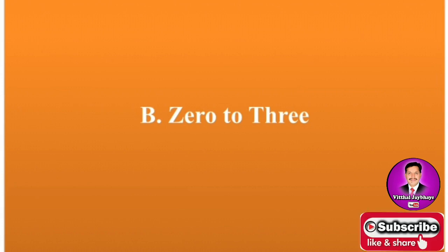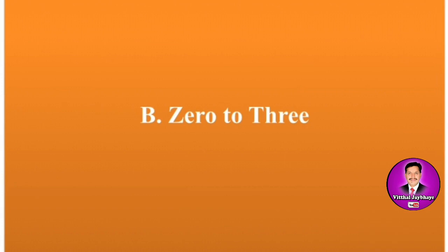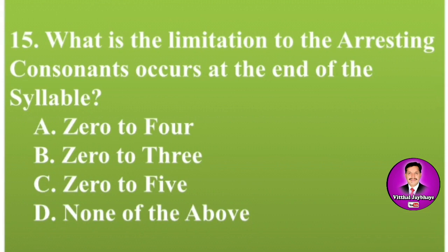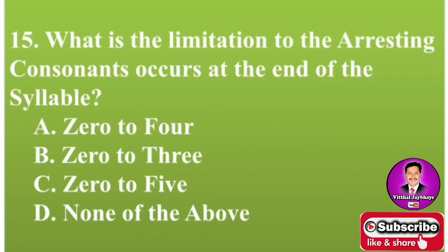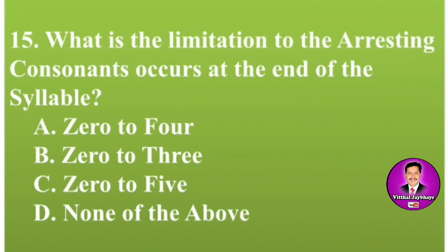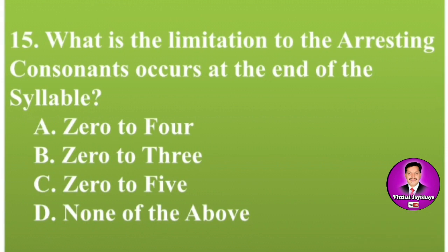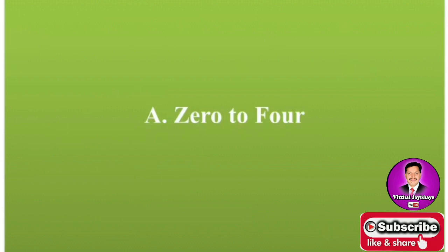For preparation of MCQs, read the summary of every chapter — there are very important clues for MCQs. Next MCQ: What is the limitation due to the arresting consonants occurring at the end of the syllable? Options are A: 0 to 4, B: 0 to 3, C: 0 to 5, D: none of the above. The correct answer is A — 0 to 4.